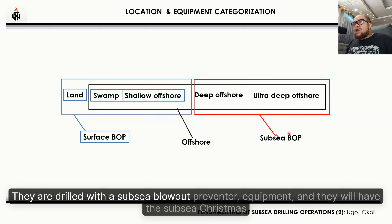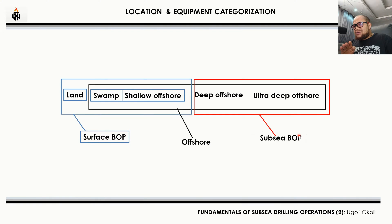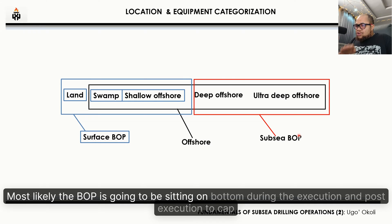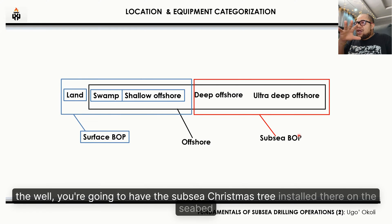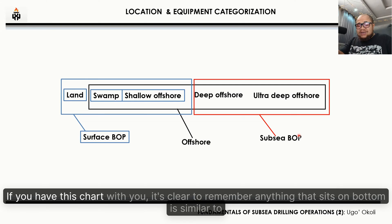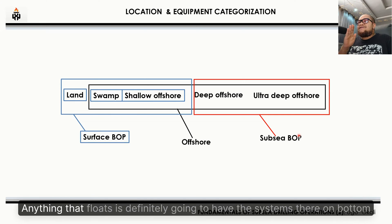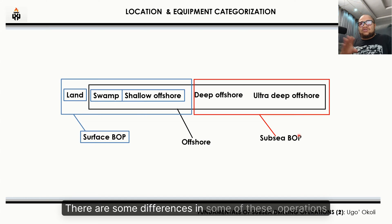Moving ahead to what you see demarcated in red — those wells are drilled with a subsea blowout preventer and they will have the subsea Christmas tree, so everything is going to be sitting on the seabed. The key to that is anything that floats — a drillship or semi-submersible — the BOP is going to be sitting on bottom during execution, and post-execution to cap the well you'll have the subsea Christmas tree installed on the seabed. Anything that floats is definitely going to have those systems on the bottom.